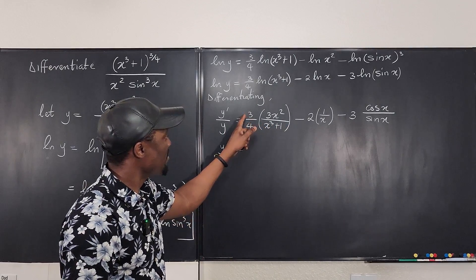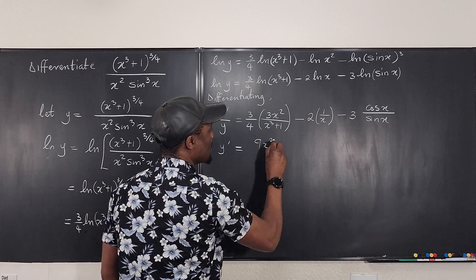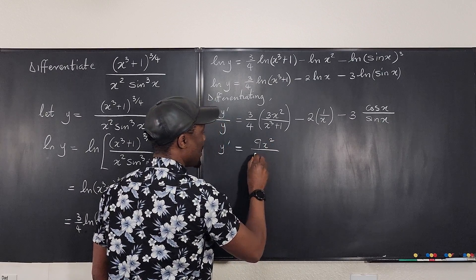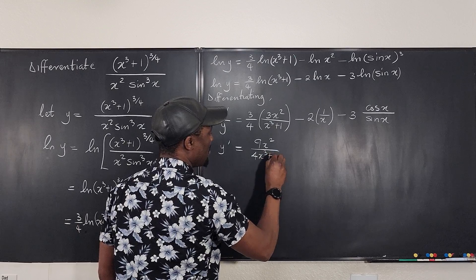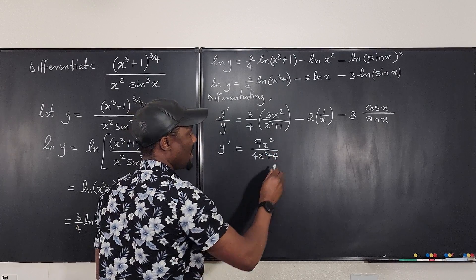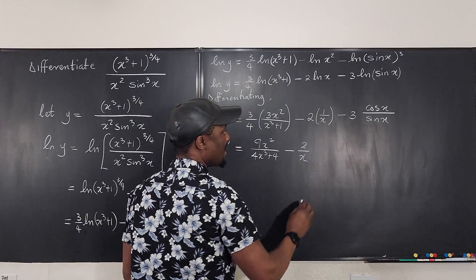So if I multiply this by this, I'm going to get 9x squared over 4x cubed plus 4, just to keep it that way, minus this is going to be 2 over x, minus cosine x over sine x.